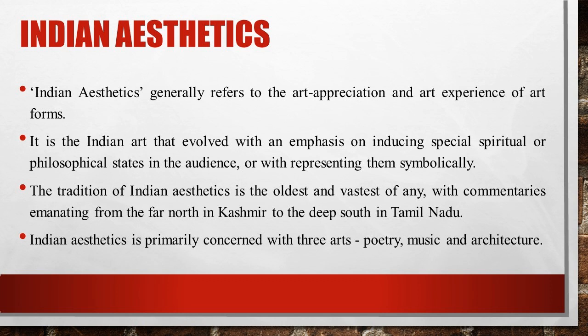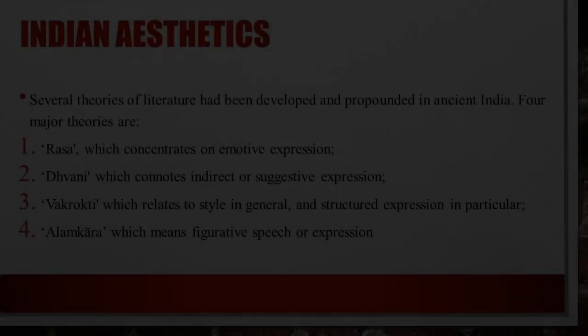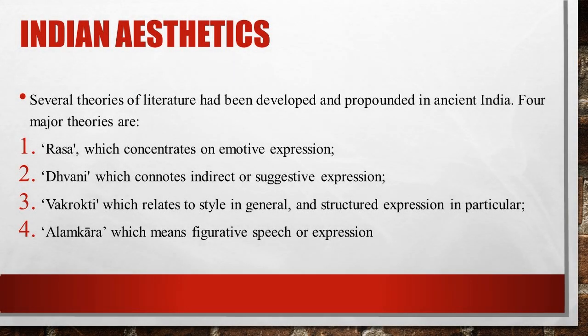Moreover, drama appeals to both visual and oral senses, as against the other two which appeal to either of the two senses. Several theories of literature had been developed and propounded in ancient India. Among these, the important four are: Rasa, which concentrates on emotive expression; Dhvani, which connotes indirect or suggestive expression; Vakrokti, which relates to style in general and structured expression in particular; and Alamkara, which means figurative speech or expression. These are some of the important theories associated with Indian aesthetics.